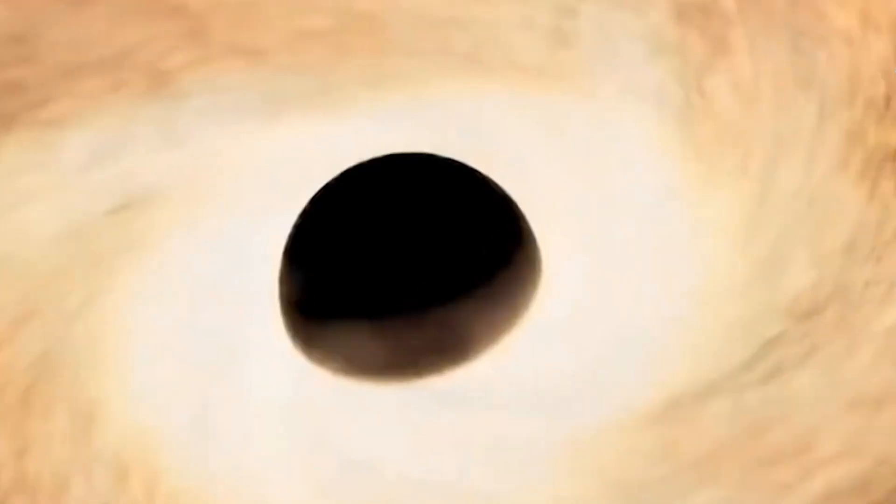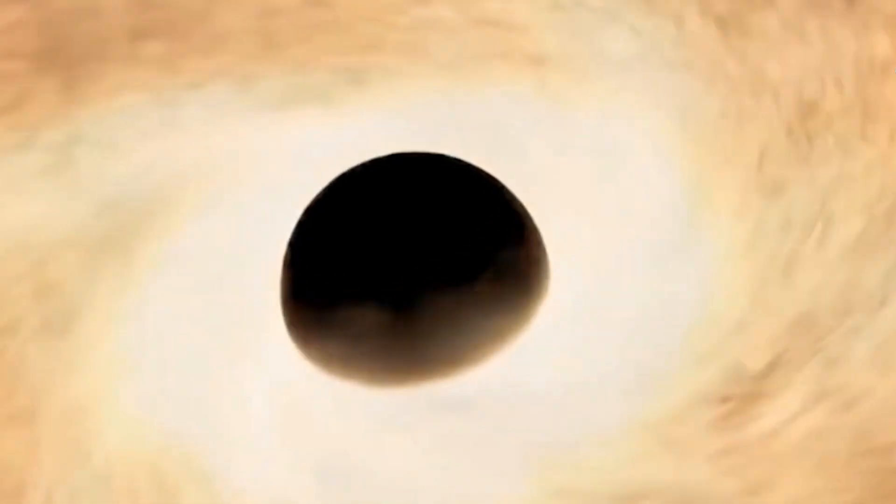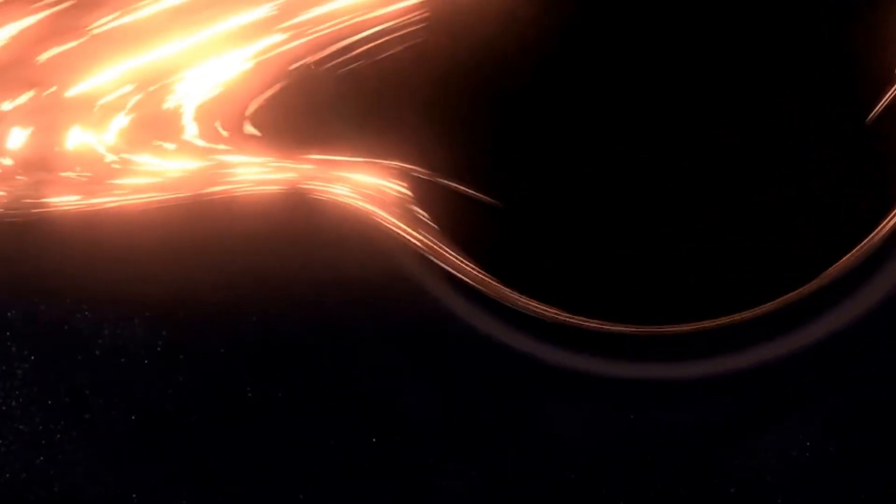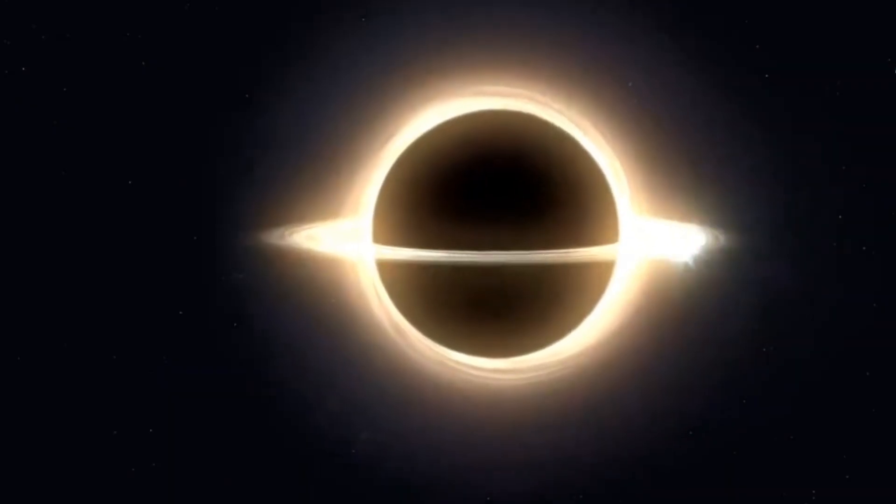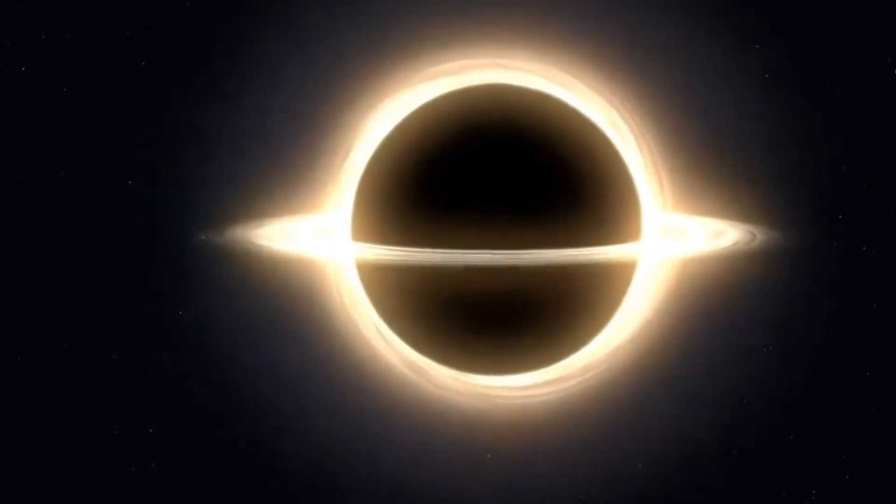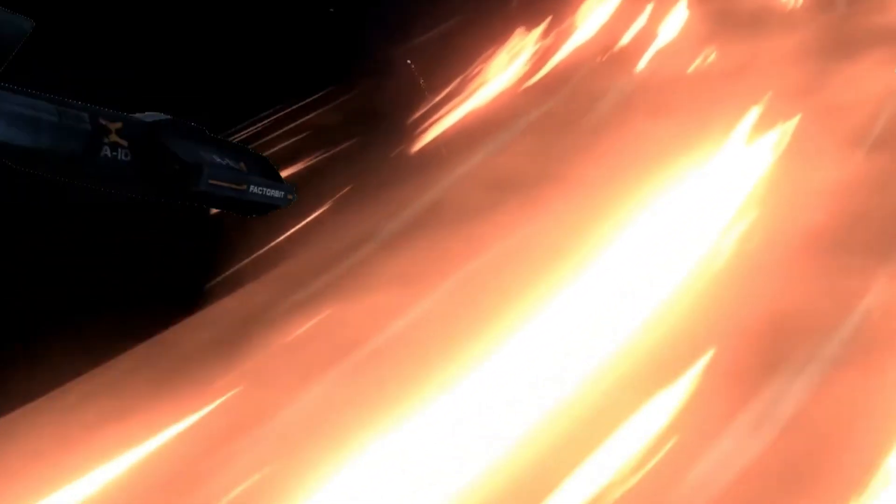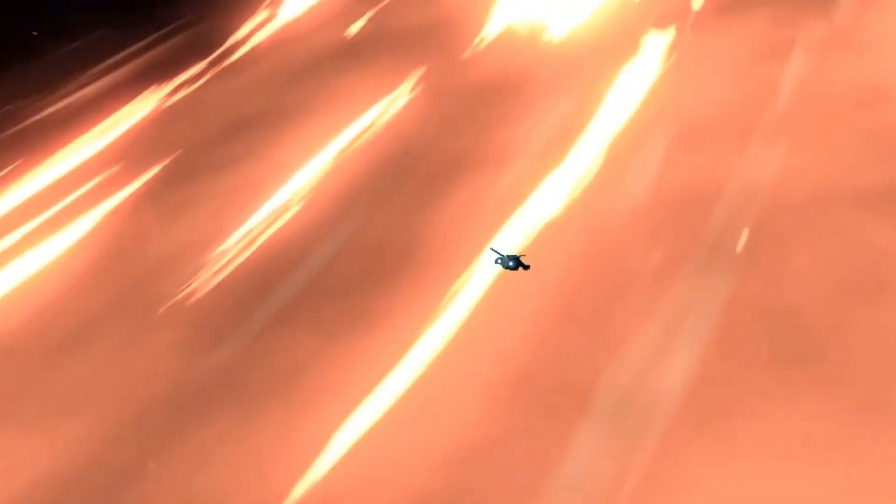Everything in the universe spins due to angular momentum. As matter gets closer to the black hole, its speed increases, eventually reaching near light speed. This creates centrifugal force which keeps matter from falling in. Instead, it keeps spinning outside, forming a disk.